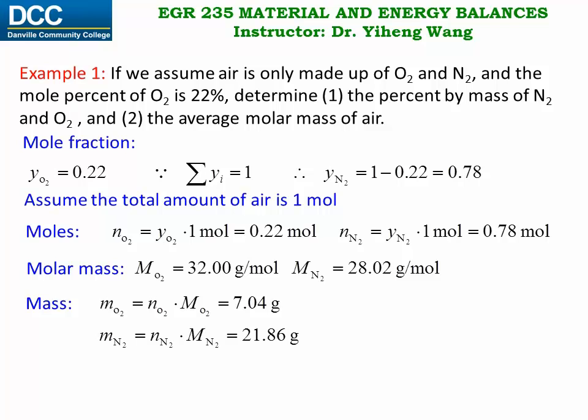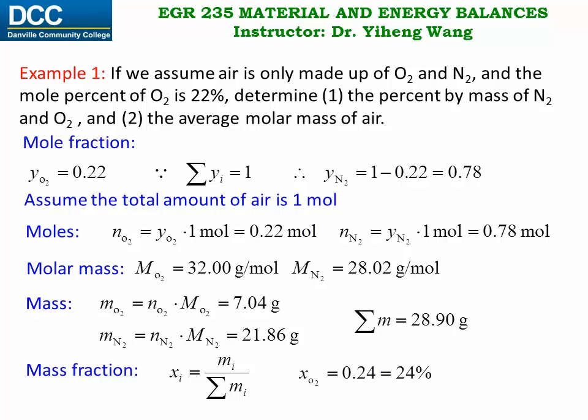The total mass of this mixture is 7.04 plus 21.86, which equals 28.90 grams. By definition, mass fraction equals the mass of a certain component divided by the total mass. From here, the mass fraction of oxygen is 0.24, or 24 percent, and the mass fraction of nitrogen is 0.76, or 76 percent.